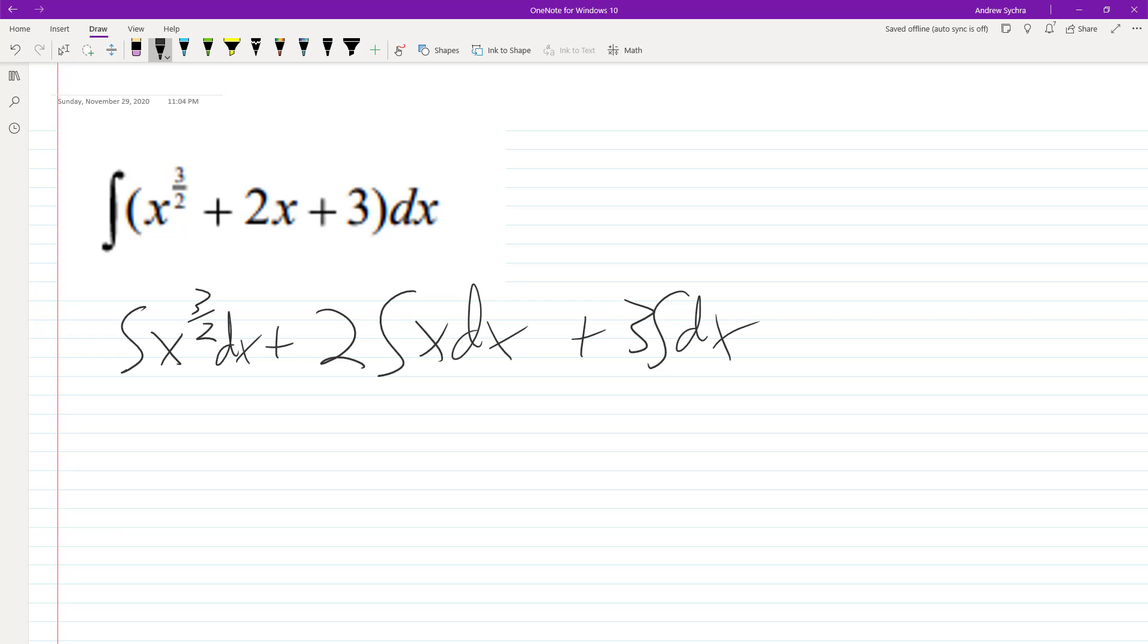So what we do here is we add 1 to each exponent, x raised to the 3 halves plus 1, divided by 3 halves plus 1, so that's 5 halves.